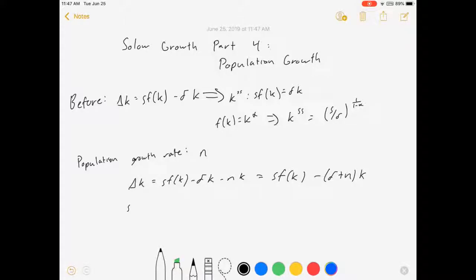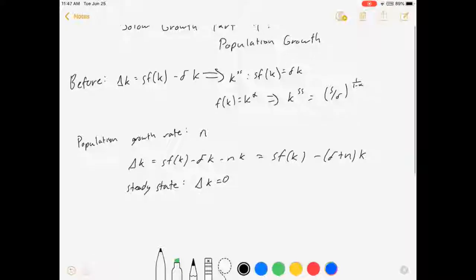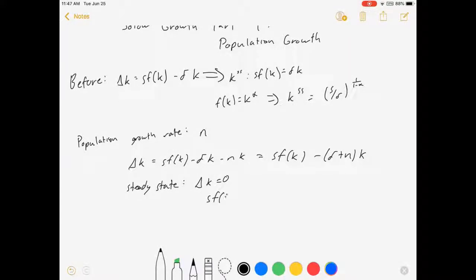All right, so in a steady state, delta K equals zero, which means that S F of K equals delta plus N times K. Now, with the Cobb-Douglas thing we had earlier, where F of K is equal to K to the alpha, you'll notice that this looks a lot like everything we had up here, except now, instead of having just delta, we have delta plus N. So we're going to get the steady state level of capital per worker is equal to S over delta plus N to the 1 over 1 minus alpha. All right, there's your steady state.